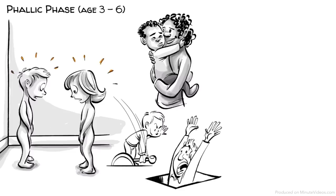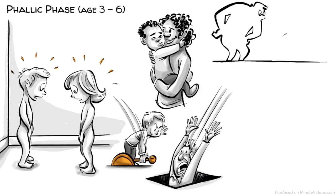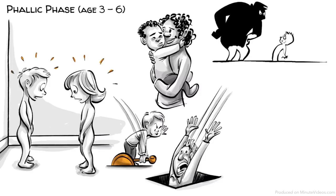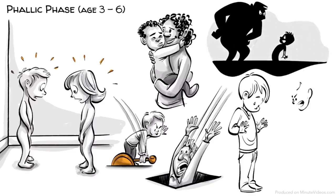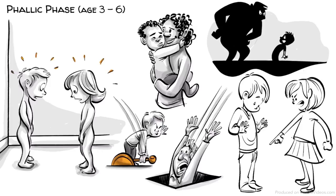Ernst and Hans desire to possess their mother and fantasize about getting rid of their father. But they know that their father is stronger and fear being punished for their desire. Freud called this castration anxiety. Ida experiences penis envy. She believes that a penis is the key to power and domination and also wants one.